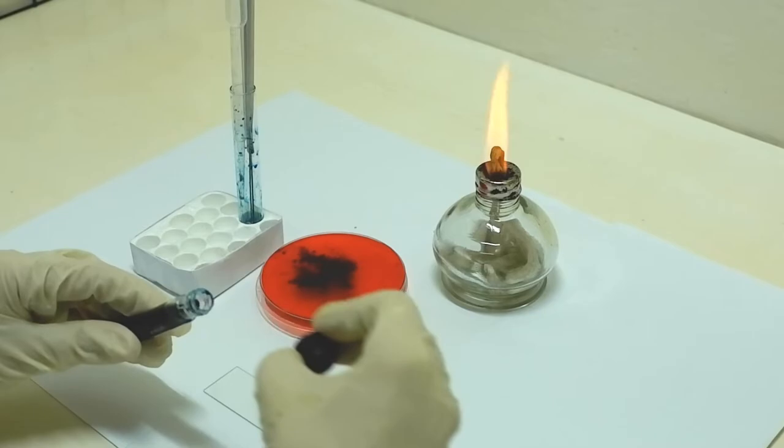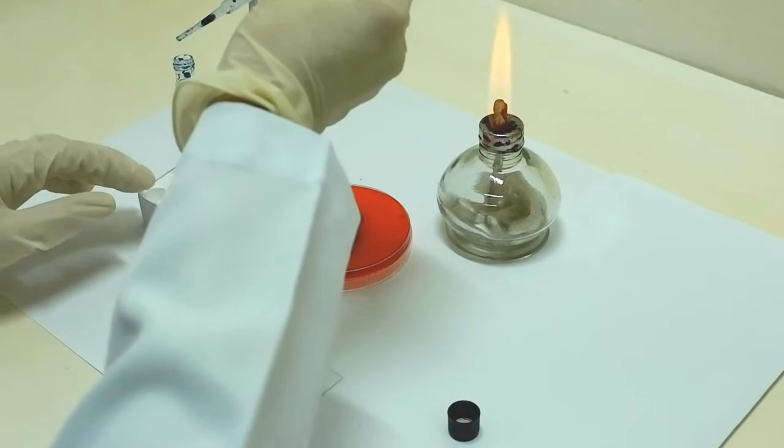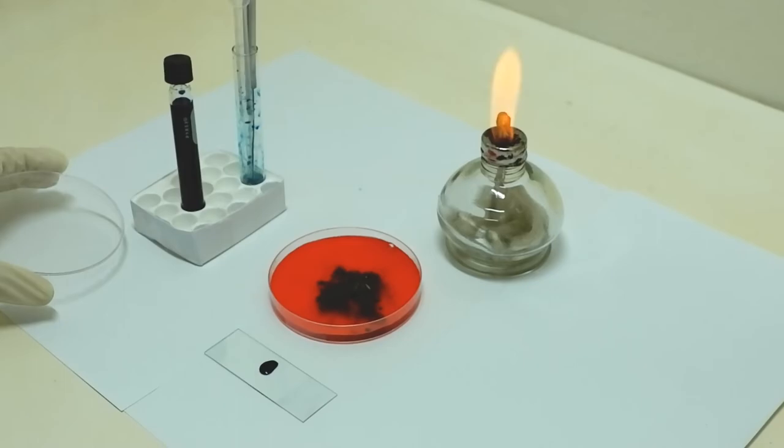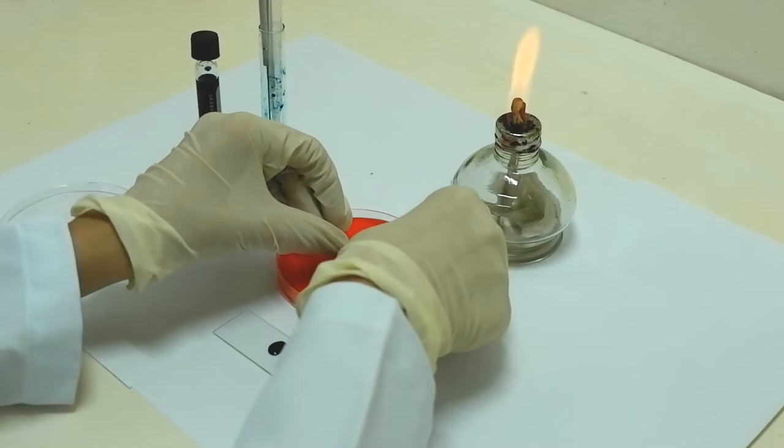The first part of the procedure is to prepare a sterile slide with a drop of your lacto phenol cotton blue stain. Now with your two inch piece of transparent cellophane tape, hold it between your fingers with the sticky side out.